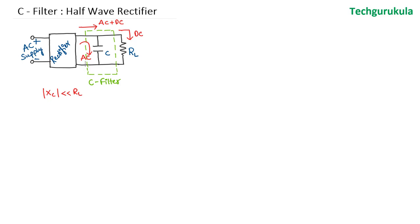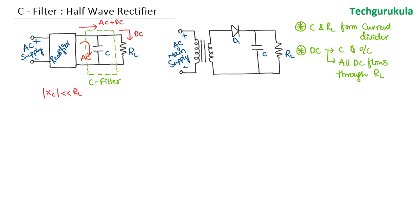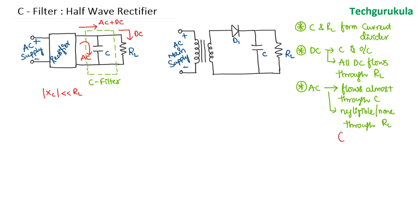Now let me put the half-wave rectifier in place of the rectifier block. Key points: capacitor and the load resistor form a current divider. For DC, capacitor is open circuit, hence all DC flows through the load resistor RL. For AC, it flows almost entirely through the capacitor and is negligible through the load resistor. This is possible only with the assumption that reactance offered by the capacitance is far less compared to the load resistance.